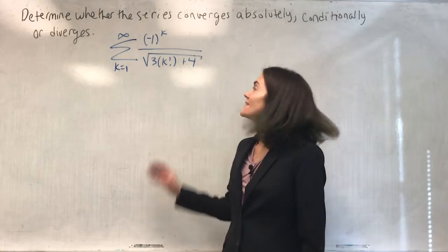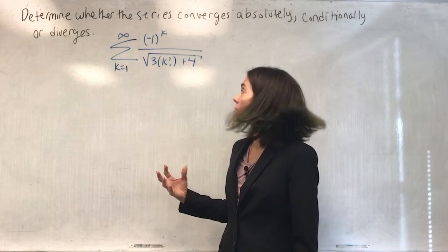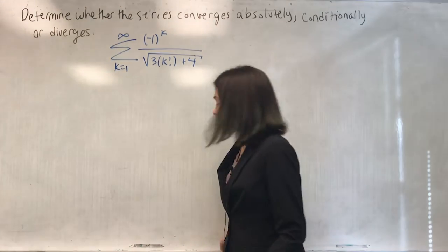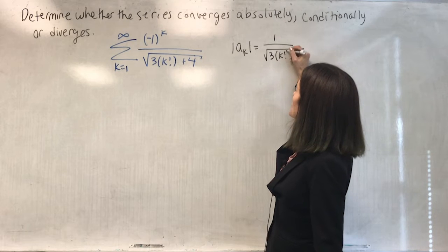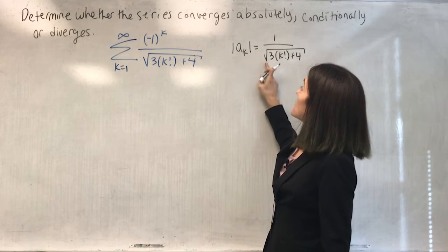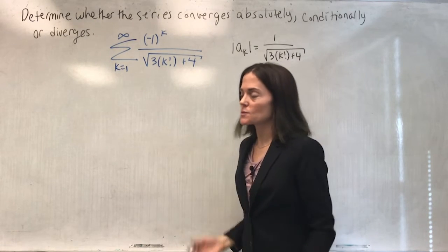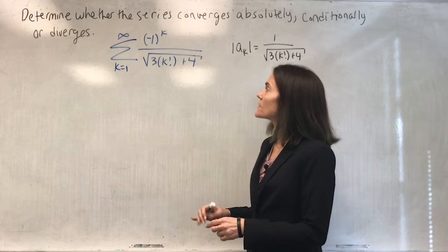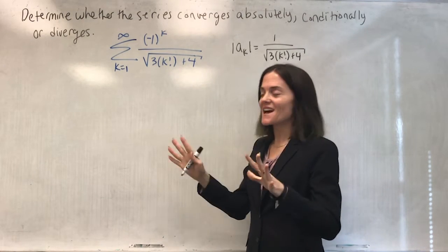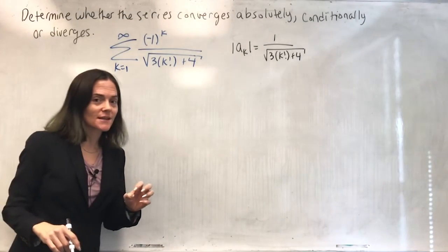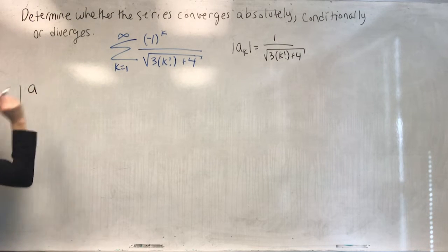Let's do one more example. Again, this is an alternating series. Let's ask ourselves: do the terms go to zero? Sure. The absolute value of a_k is 1 over the square root of (3·k! + 4). This definitely goes to zero because the denominator is growing and the numerator is fixed. The term test tells us nothing. When I see factorials, I think: ratio test. The nice thing about the ratio test is its conclusion gives absolute convergence.